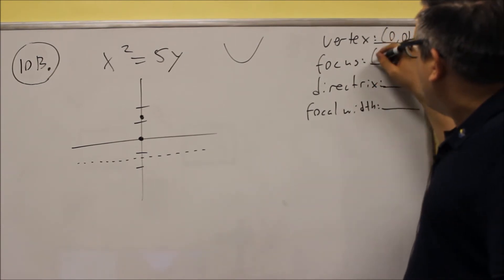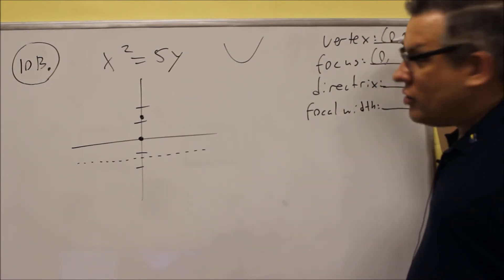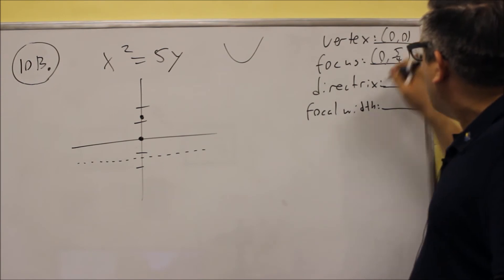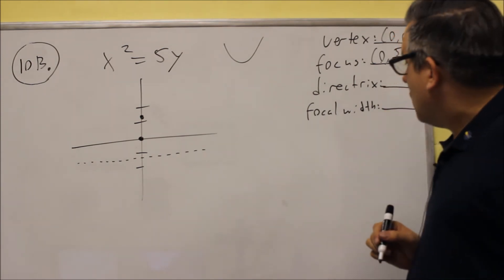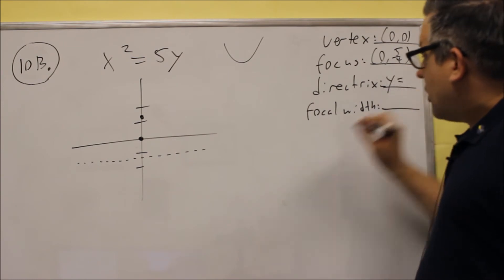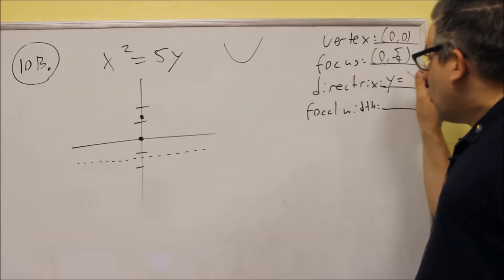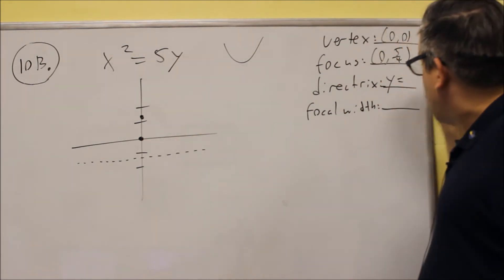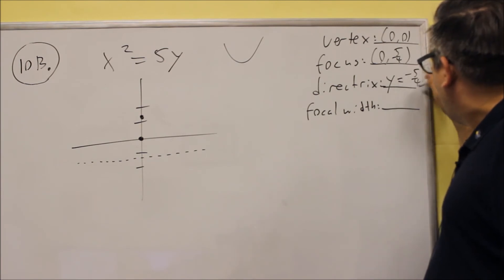So, the focus is going to be at (0, 1.25), which we're going to use the exact value here, (0, 5/4). The directrix is going to be at y equals, because it's a horizontal line, you need to have the y equals as part of your answer, y = -5/4.